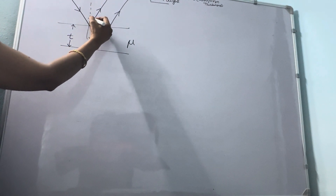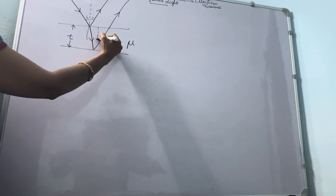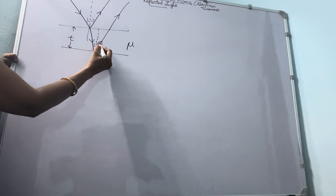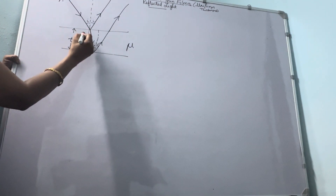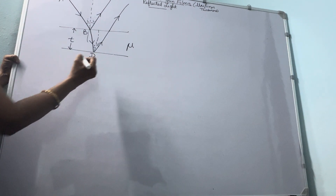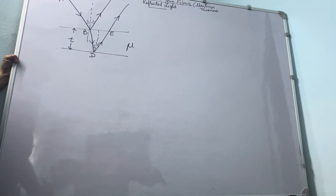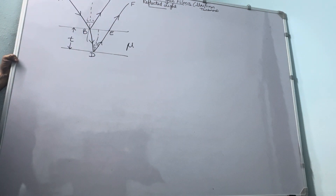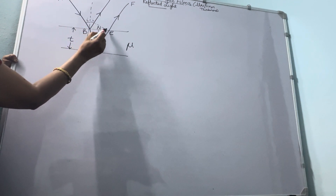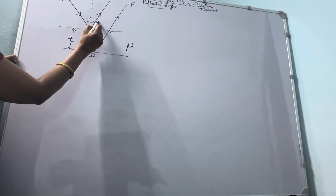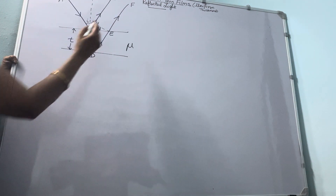We will draw a perpendicular and mark this as angle I, the angle of incidence. Since light has been refracted in the medium, this becomes our angle R. AB is the incident light, BD is the refracted light, DE is that same light which has been reflected in the same medium, and it is coming out as EF, while BC is the other ray. The perpendicular dropped here is DN, and from E we drop a perpendicular on this ray named EH. The path difference is BH, which is the reason for fringe formation.